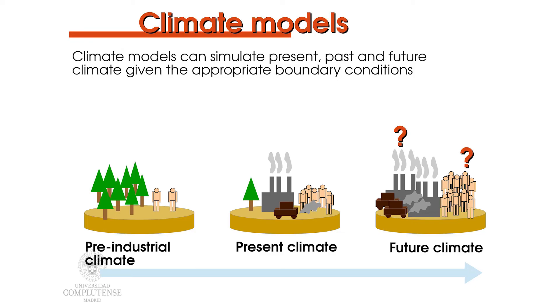However, how do we predict what the evolution of these gases and other species will be like? Such evolution will heavily depend on many choices that we as humans will make — for instance, how will technology, economy, lifestyle, or policy change? How many of us will there be? How much energy will we consume? Unfortunately, we cannot predict such changes. But this does not mean there is nothing we can do, because we can imagine possible futures and based on them evaluate what the climate would look like. And this is precisely what scenarios are about, which is the topic of our next video on climate scenarios.